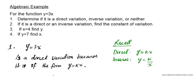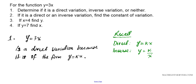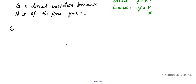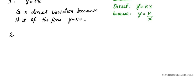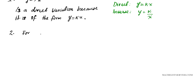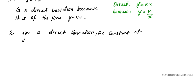Problem two says if it is a direct or inverse variation, determine or find the constant of variation. We're dealing with the constant of variation for a direct variation. One thing to remember is that for a direct variation, the constant of variation is represented by the letter k — it's k in the equation y equals kx. Think of the line y equals kx in y equals mx form, so k is basically the slope. Whatever the coefficient of x is, that is k, the constant of variation.